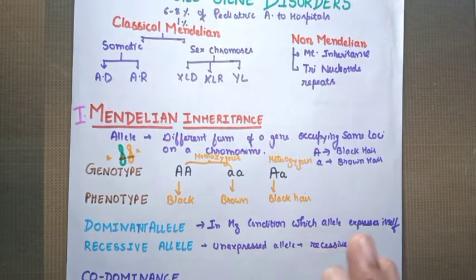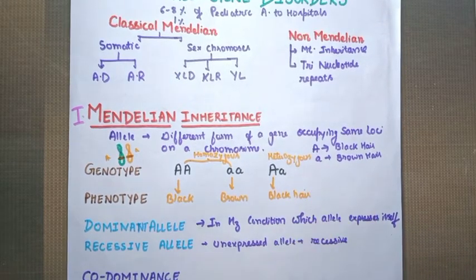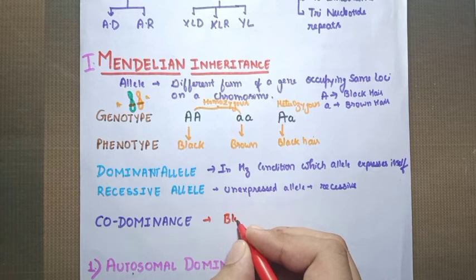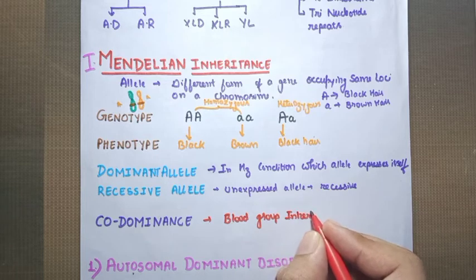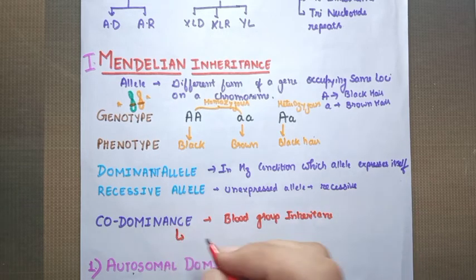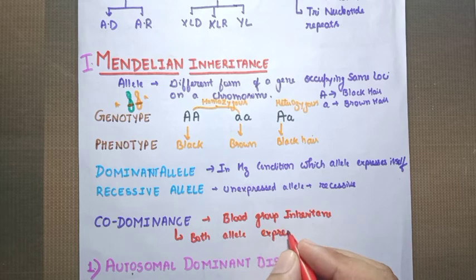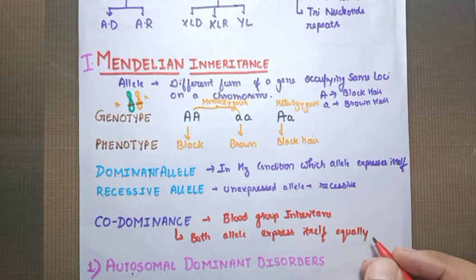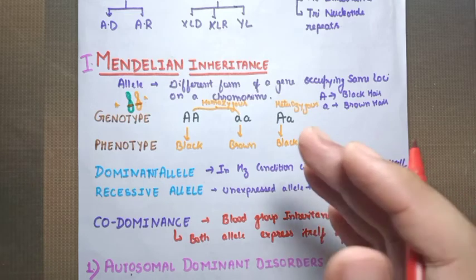This was all about the basic concepts of Mendelian modes of inheritance. There is a term called codominance — if both alleles express themselves in equal quantity, that is called codominance. Codominance is seen in blood group inheritance. In codominance, both alleles express themselves equally.